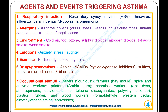Agents and events triggering asthma: 1. Respiratory infections — Respiratory syncytial virus (RSV), Rhinovirus, Influenza, Parainfluenza, Mycoplasma pneumoniae. 2. Allergens — Airborne pollens (grass, trees, weeds), house dust mite, animal dander, cockroaches, and fungal spores.